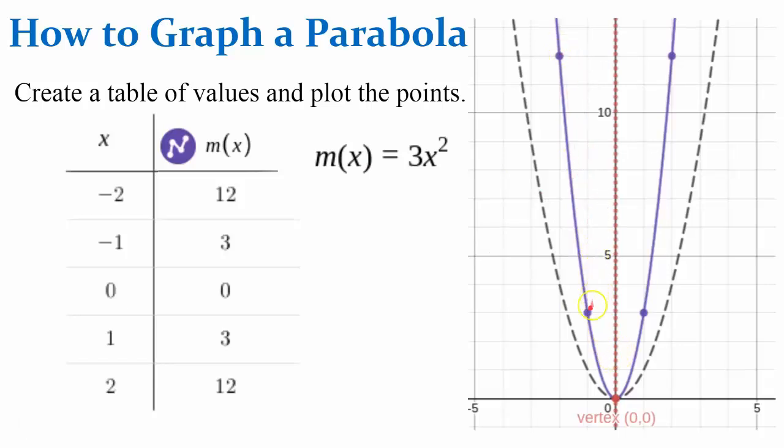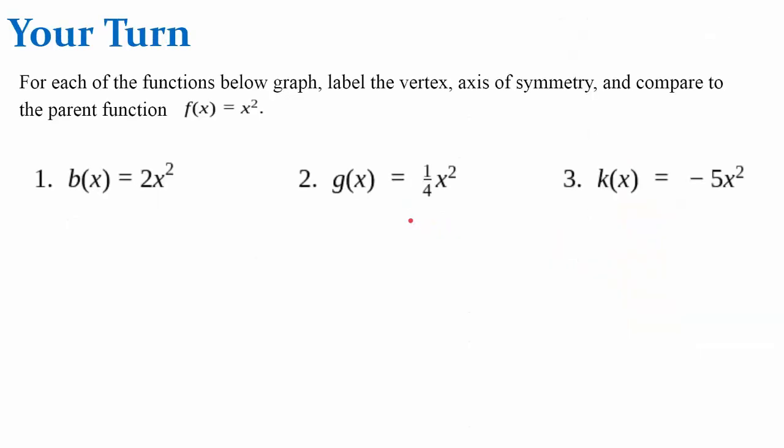Negative 2, 12. Negative 1, 3. 0, 0, our vertex, our axis of symmetry.